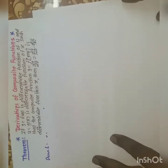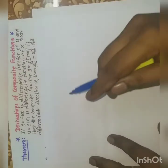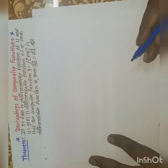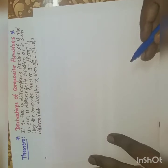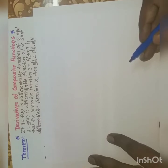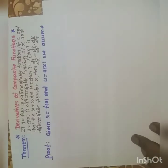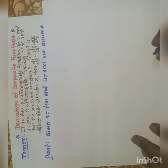We will start the theorem for differentiation of the composite function. The statement of the theorem is: if y = f(u) is a differentiable function of u, and u = g(x) is a differentiable function of x, such that the composite function y = f(g(x)) is a differentiable function of x, then dy/dx = (dy/du) × (du/dx).